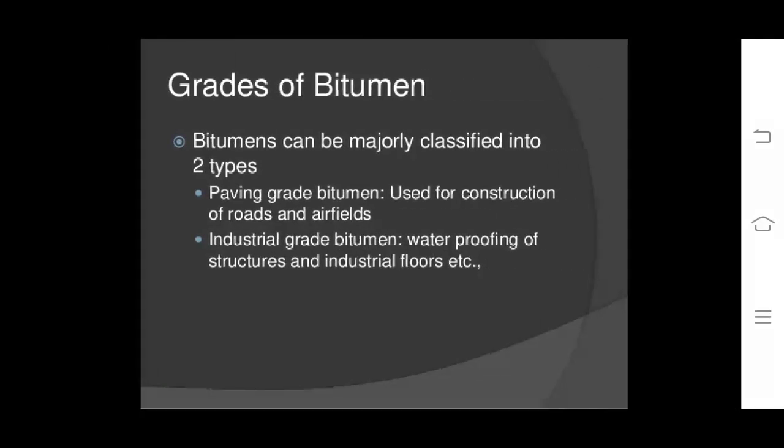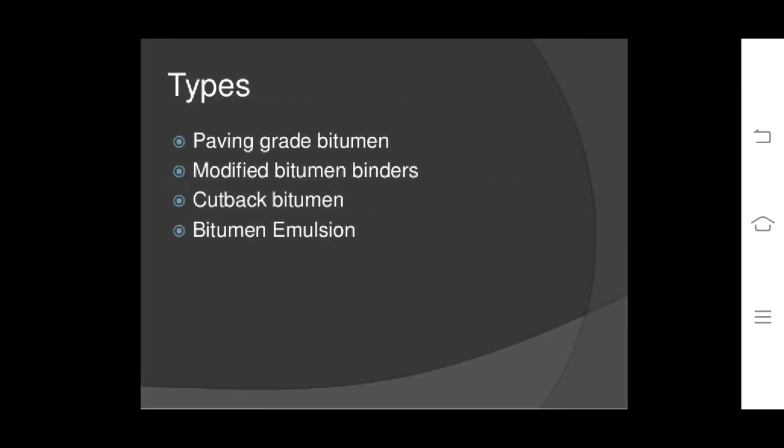Grades of bitumen: bitumen can be majorly classified into two types — paving grade bitumen, used for construction of roads and airfields, and industrial grade bitumen, which is used for waterproofing of structures and industrial floors. There are various types of bitumen like paving grade bitumen, modified bitumen binders, cutback bitumen, and bitumen emulsion.